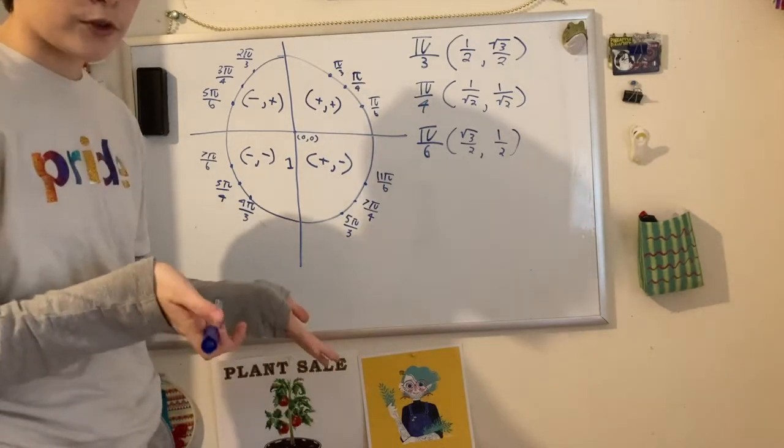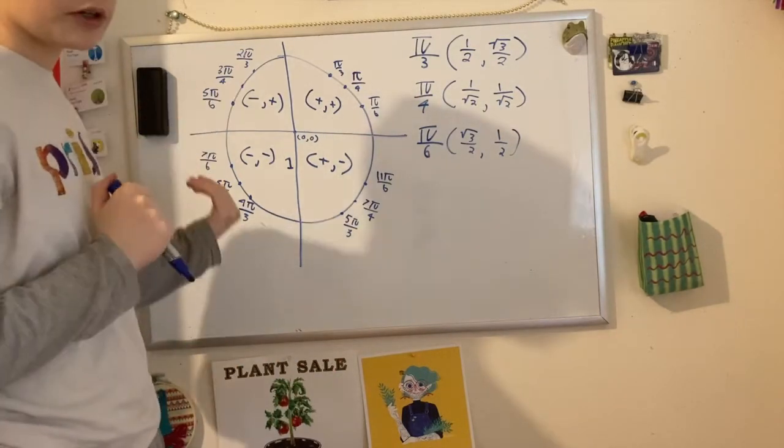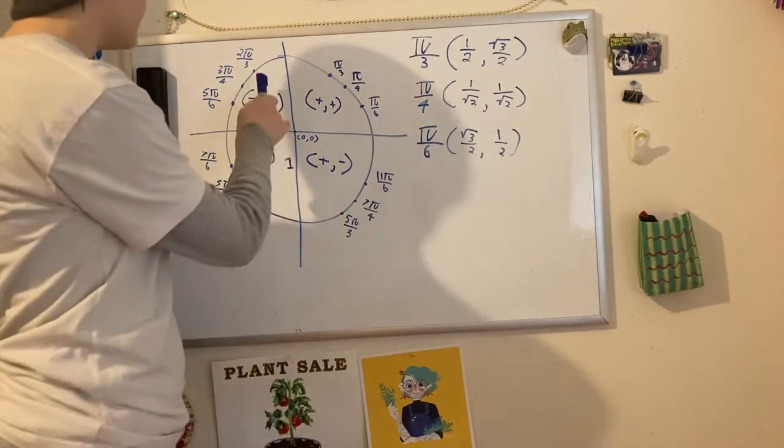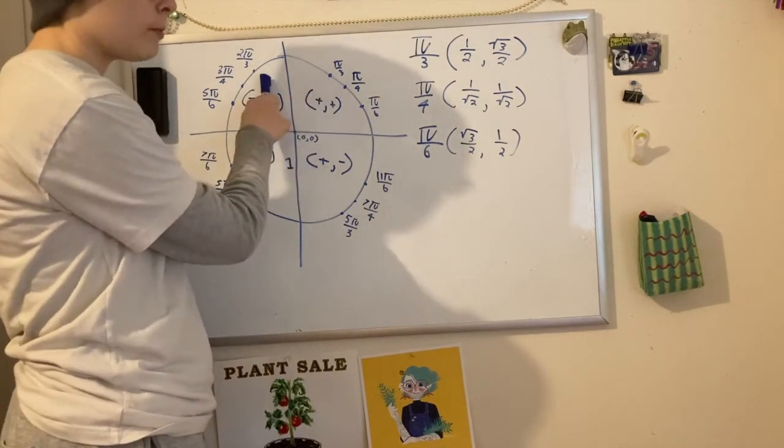So now, of course, knowing that these are just reflections, we can easily determine the coordinates of any of these other nine points. For example, in the second quadrant, the reflection of π/3, aka 2π/3,